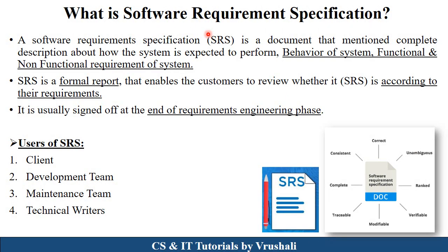The first thing is: what exactly is SRS? As we discussed earlier in the software development life cycle, the first phase is requirement gathering and analysis. Here, the project head collects all the requirements from the customer. These requirements are mentioned in one document, called the SRS — software requirement specification document. As per the definition, SRS is a formal report that mentions a complete description of how the system is expected to perform, the behavior of the system, and the functional and non-functional requirements. It is signed off at the end of the requirement engineering phase.